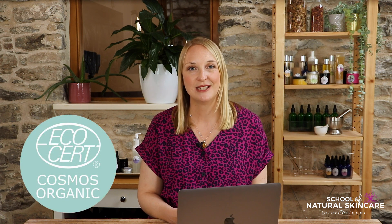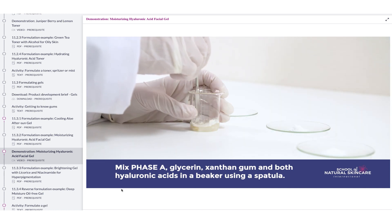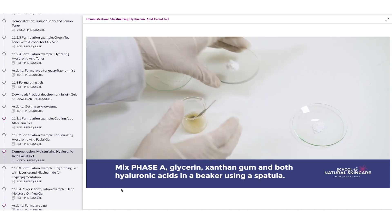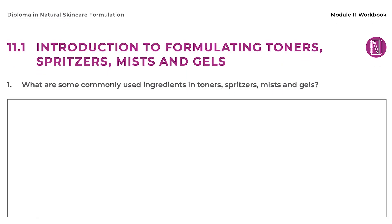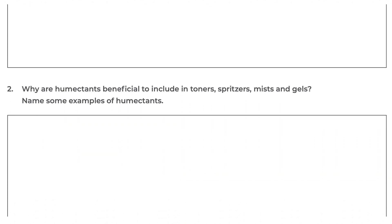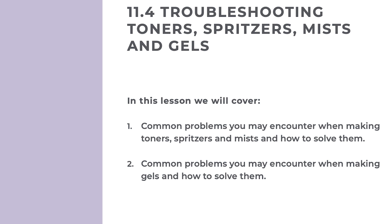We provide lots of example formulations for you to try. We explain why we have chosen the ingredients used, give you the formula, method and product specifications. We always focus on natural and organic formulations and provide a lot that meet the requirements of certification bodies like Cosmos and EcoCerts. We also include product demonstration videos filmed in our lab by a professional TV film crew — these are very detailed step-by-step videos so you can see exactly how to make different products. We provide lots of suggested activities so you can put what you are learning into practice and there is space to record what you do in your workbook. Some of the formulations we provide are examples of reverse formulating or using a benchmark — we take a product on the market, analyse the ingredient list and create a very similar formula. We always provide a troubleshooting lesson to help you fix common problems that you might experience.